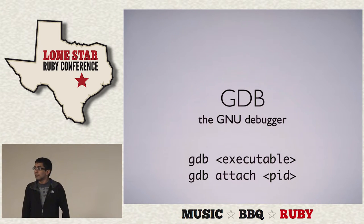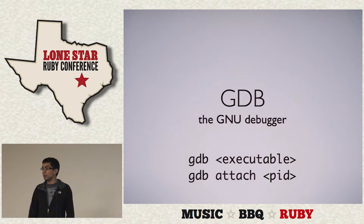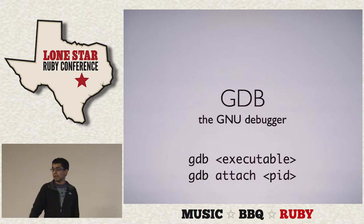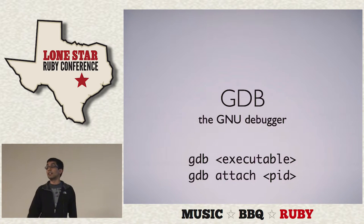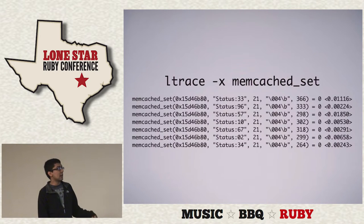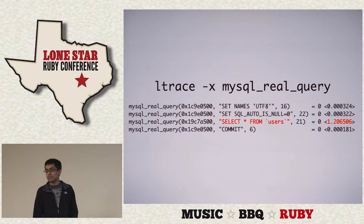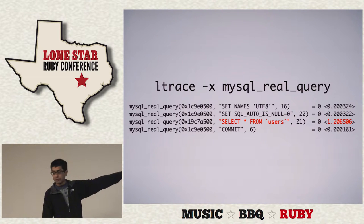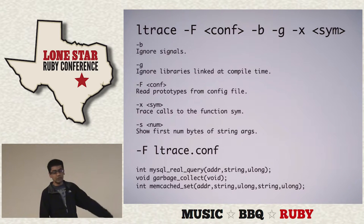Question: How did you get from seeing memcpy to figuring out EventMachine was doing it? The easiest way is with GDB — attach to the process, set a breakpoint, and check the entire stack trace. Question: How do you get function names to use with ltrace? You look at the code — I knew MySQL was making queries so I pulled up the MySQL client to figure out what functions to trace. You have to provide the function signature in an ltrace.conf file so it knows how to show the arguments.